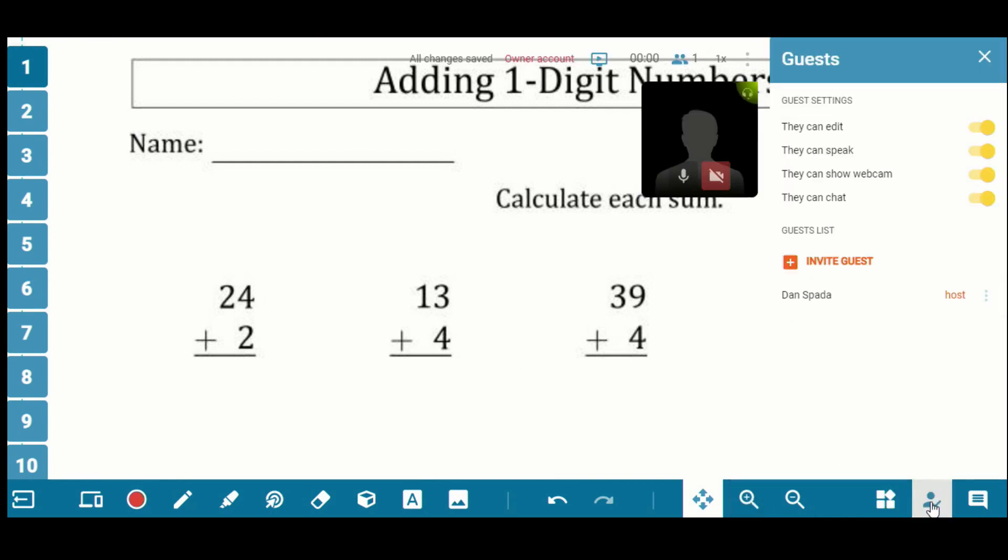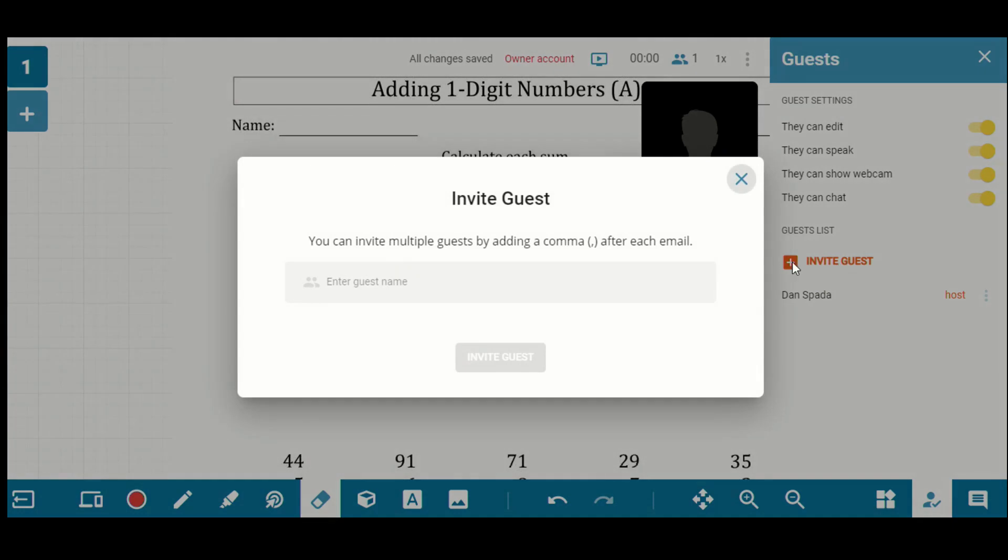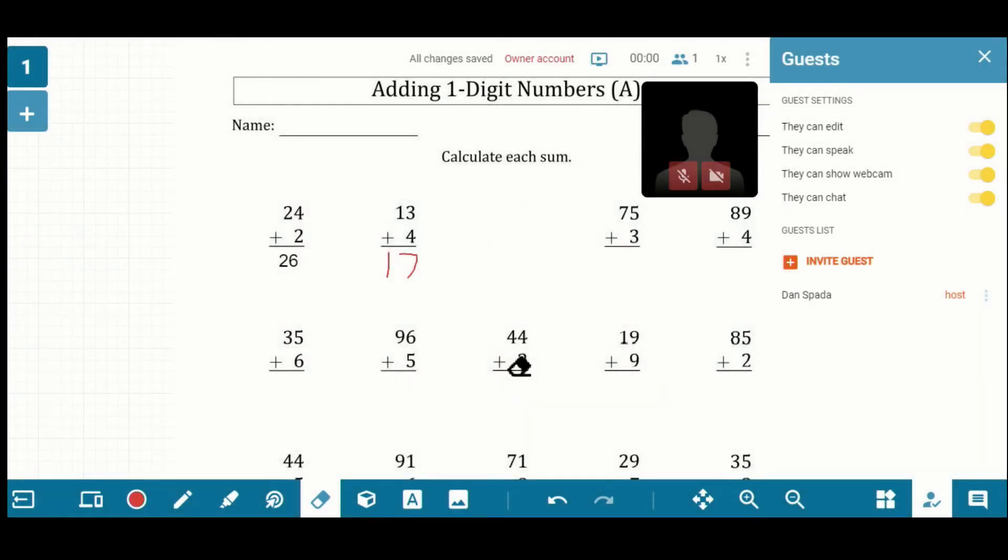There are guest settings so that once you invite the students in, you can decide what the students can do, whether they can edit, whether they can speak, whether they can appear on webcam and whether they can chat. And it's very easy to invite the guests. So if you click on invite guest, I'm just going to put in my own email address just to show you what this looks like. So I'll invite myself. And then in the person's email, it just gives you a link that you can click on. So I'm going to click on that from a different computer here.